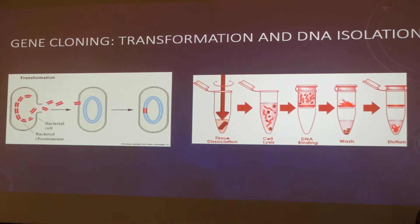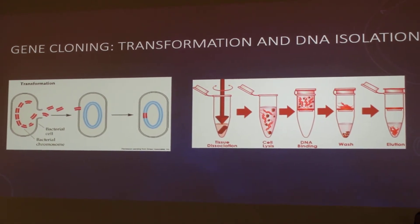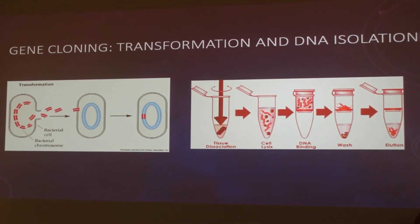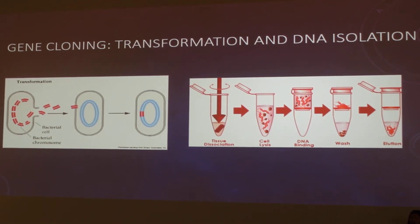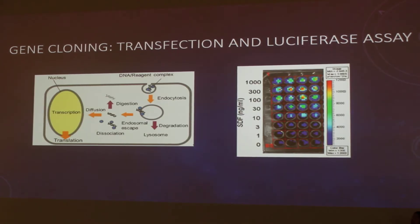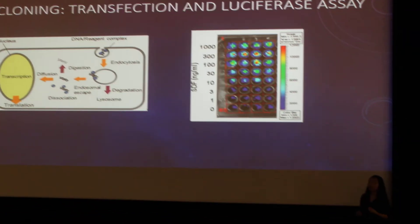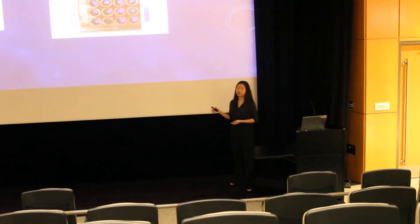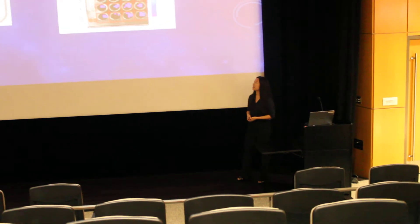The first cells used are bacterial cells, in a process called transformation, which mass-produces the DNA construct we created. After transformation, DNA isolation is performed to extract the DNA for the next step: transfection. Transfection is where the DNA is introduced into eukaryotic cells, after which the luciferase assay can finally be tested.